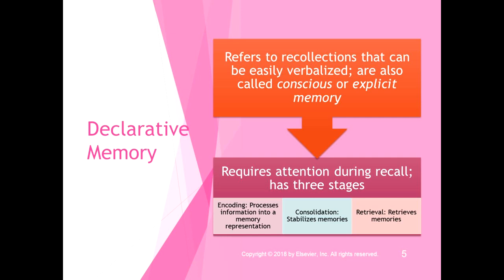Declarative memory refers to recollections that can be easily verbalized — also called conscious or explicit memory. It requires attention during recall and has three stages: you encode the memory, processing information into a memory representation to be stored; you consolidate the memory to stabilize it; and then you retrieve it. This is the basis of spaced retrieval practice — you encode it, wait to allow neurons to process the representation, revisit it to stabilize the memory, and then retrieve it on the exam.